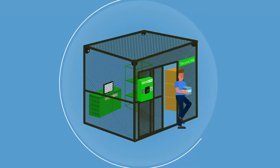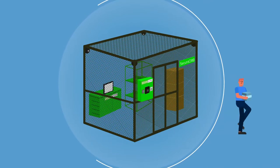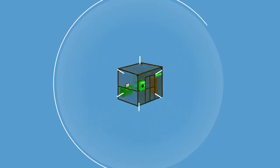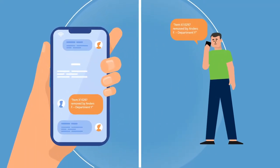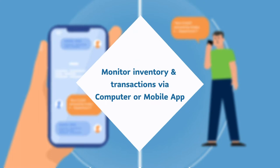employees have the freedom to get the things they need to get the job done, while admin maintains tight control over everything being used in real-time from anywhere in the world via computer or app.